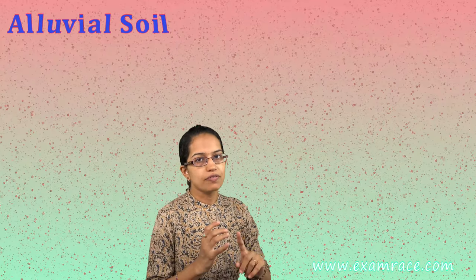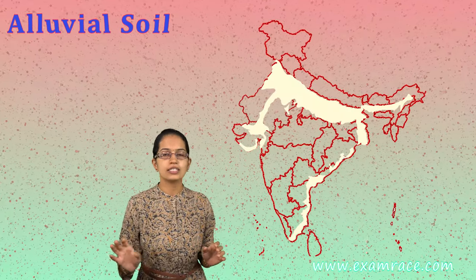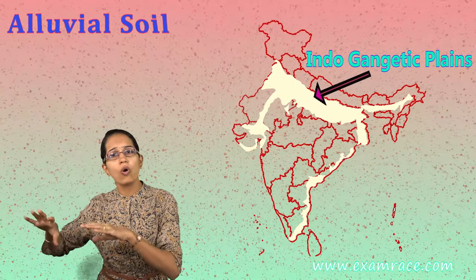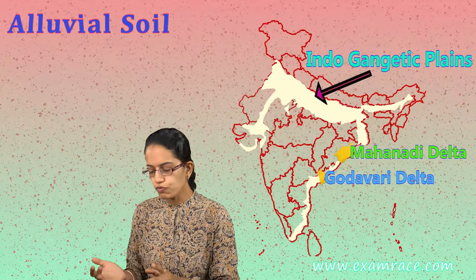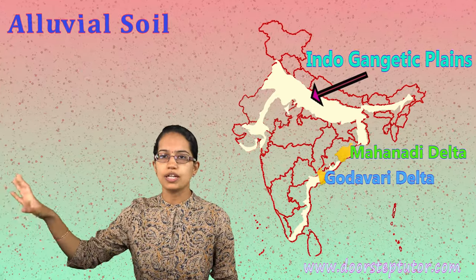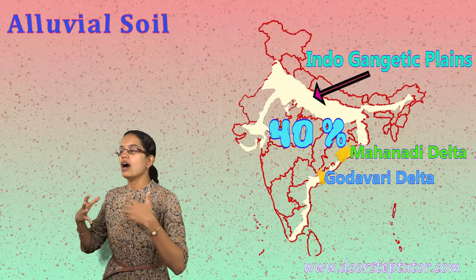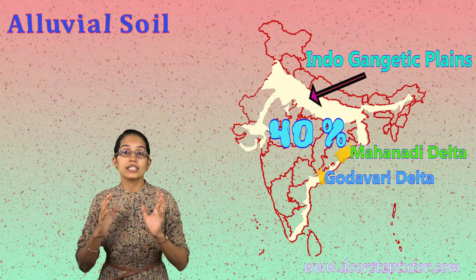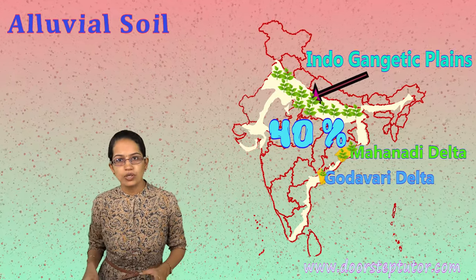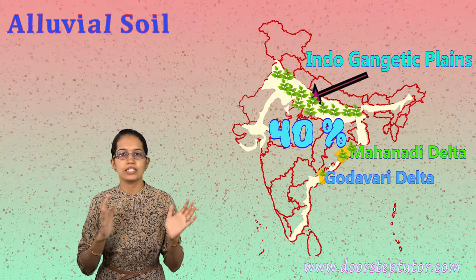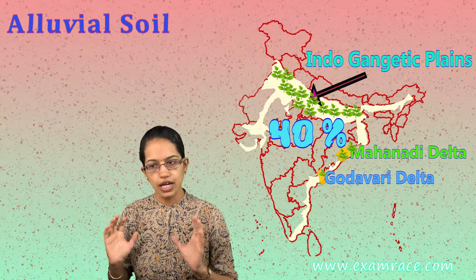The first and most important soil is alluvial soil. Alluvial soil is seen mostly along riverine tracts — the Indus and Brahmaputra — and in all the delta areas of peninsular India, such as the Mahanadi delta, Godavari delta, and Krishna delta. It is one of the most fertile soils, covering nearly 40% of the area. It is intensively cultivated. It is mainly a depositional soil, formed by erosional processes and the transportation and deposition of material by rivers.